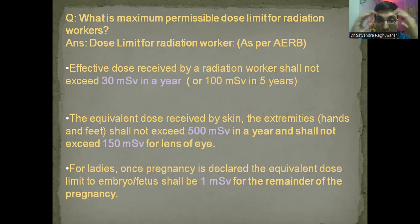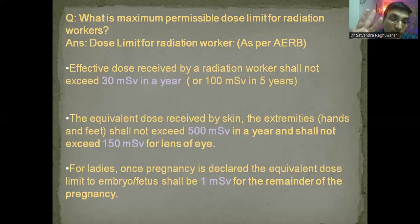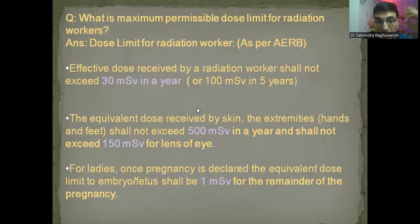The permissible dose limits — candidates don't speak these, but these are must-know values. The annual dose limit for a radiation worker is 30 millisieverts in a year and 100 millisieverts over a period of five years. The equivalent dose received by skin should not exceed 500 millisieverts. For the lens it should not exceed 150 millisieverts. For a lady worker, the radiation dose remains the same, but if pregnancy is declared, the equivalent dose to the embryo or fetus should not be more than 1 millisievert for the remainder of the pregnancy.